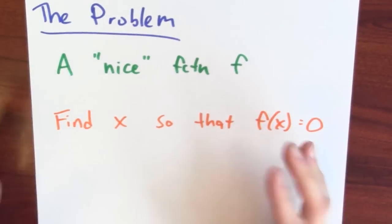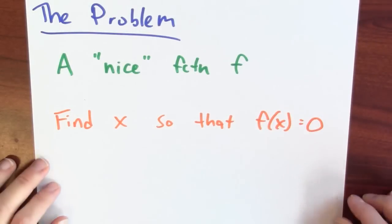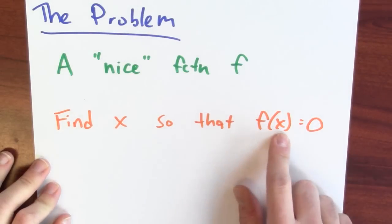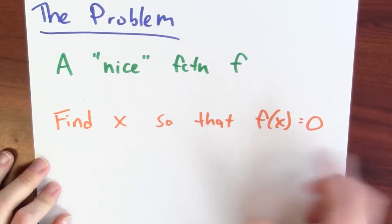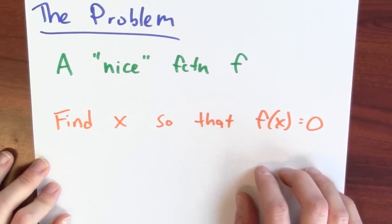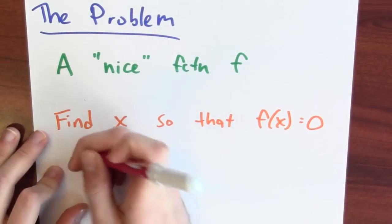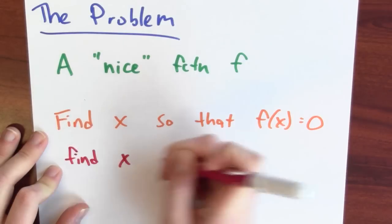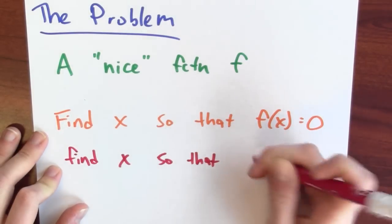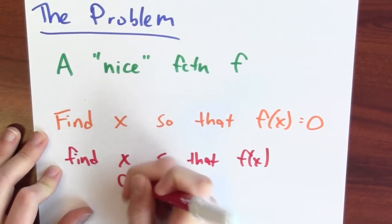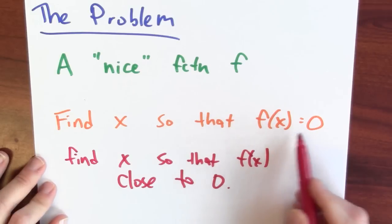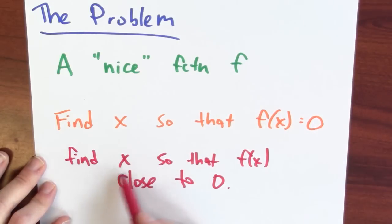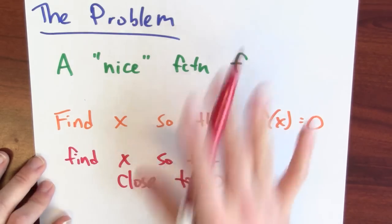In practice, this is way too much to ask for. I'm not really going to be able to find some particular input x — I might not even be able to write it down in any reasonable sense. But what I can ask for is to find some x so that f of x is very close to 0. Maybe I can't find it so that the output equals 0, but maybe I can find an input so that the output is really small.